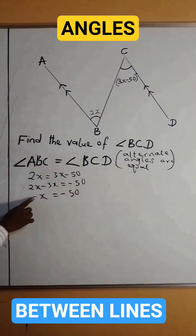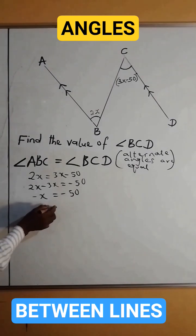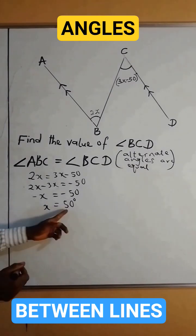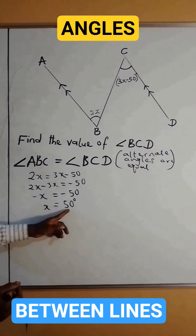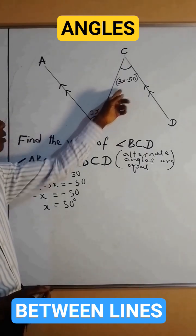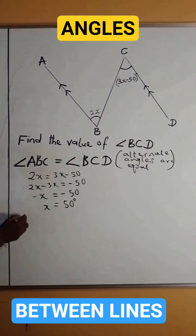Minus cancels minus, and we are left with x equals 50 degrees. Now we are going to substitute for x in this angle. So the value of angle BCD...